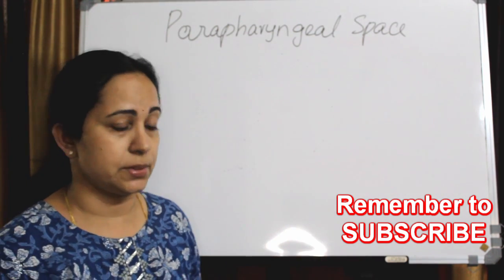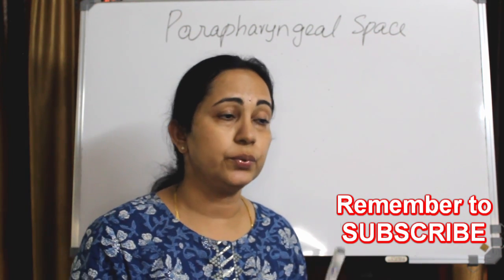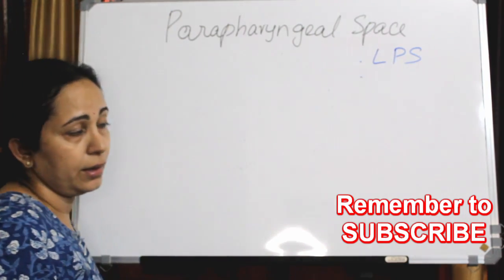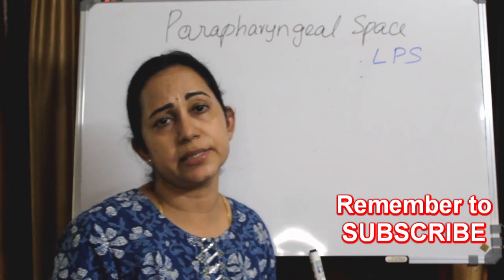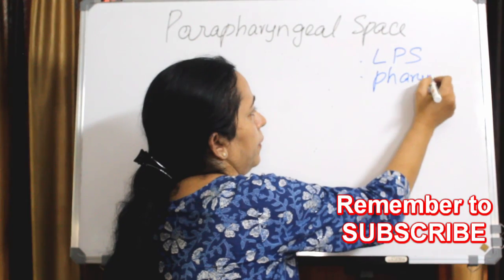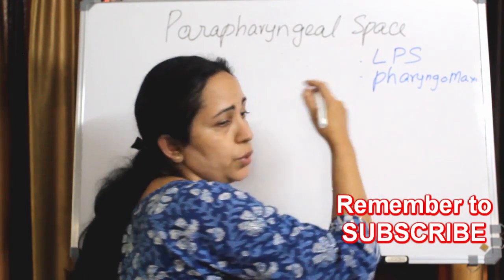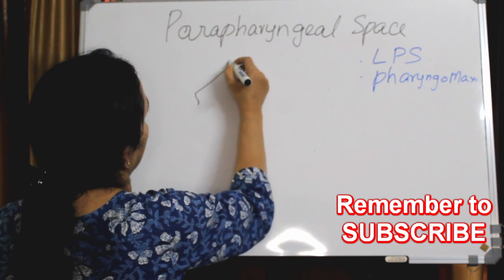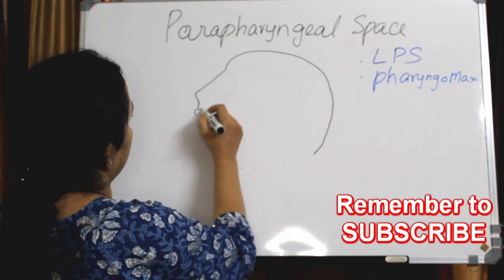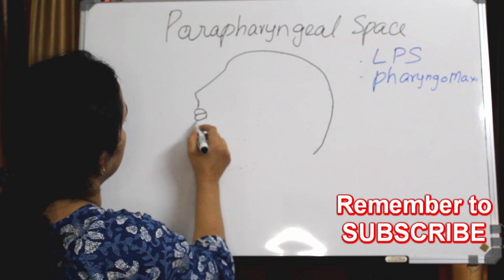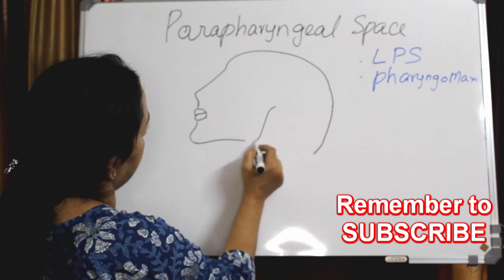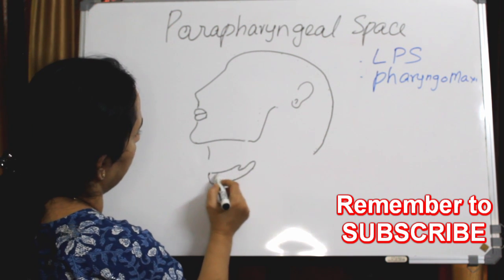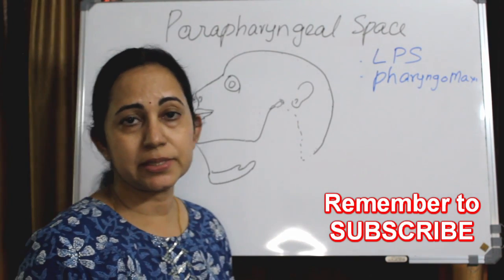There are many synonyms for the parapharyngeal space. One is lateral pharyngeal space, another is pharyngomaxillary space. I will draw the diagram first so it will be easier to remember the synonyms. It is actually an inverted pyramid related superiorly to the skull base and inferiorly to the greater horn of the hyoid bone.